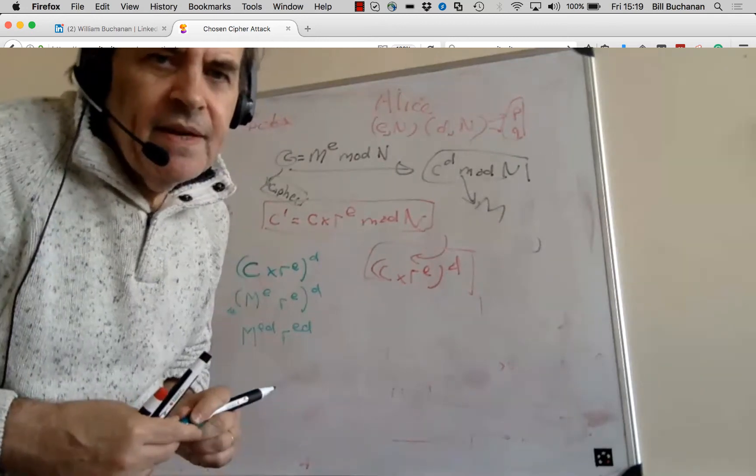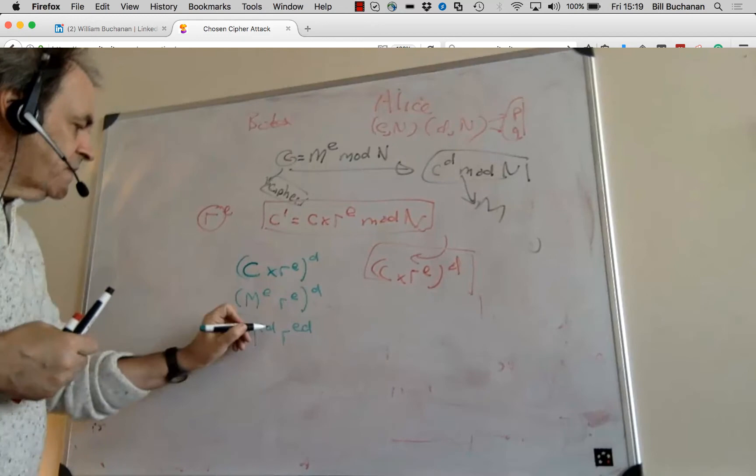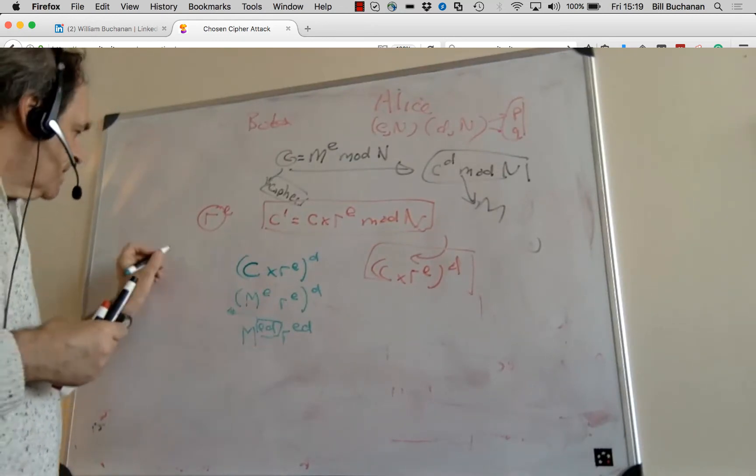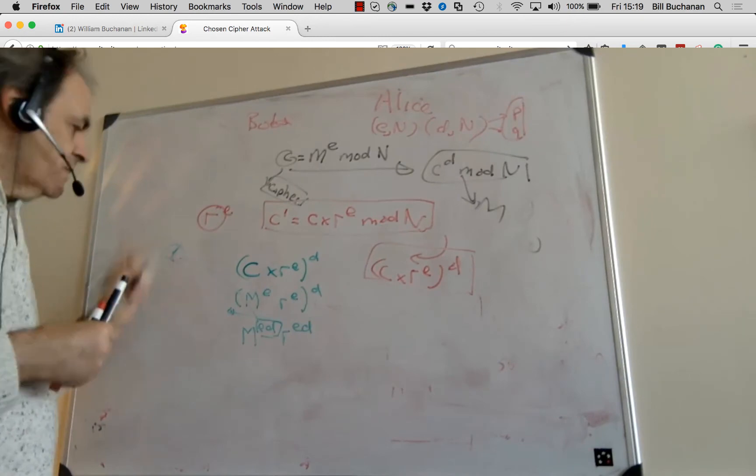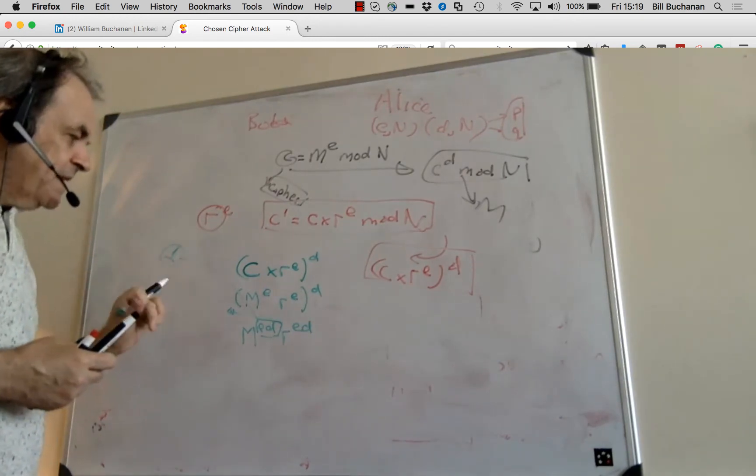As we can see from the equation there, the thing about the encryption is that that is equal to one. And when we do the mod analysis, that value is equal to 1.